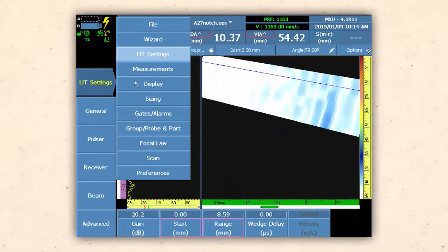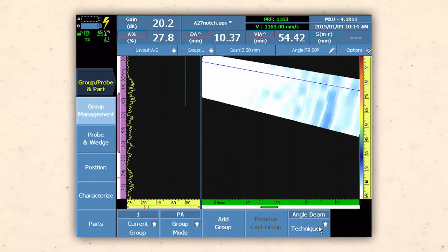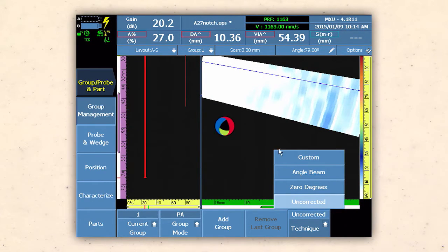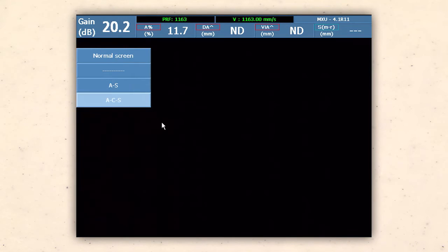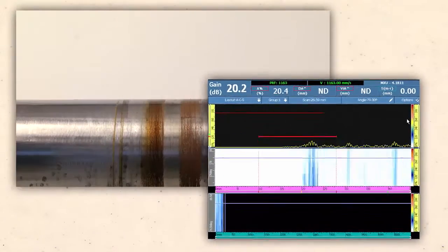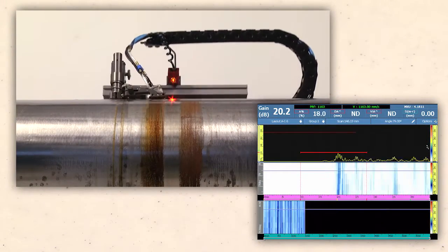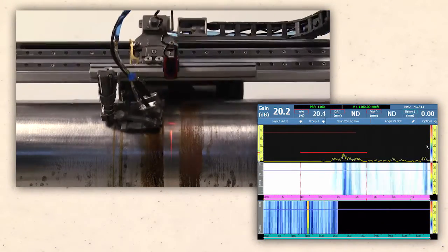For high angle surface testing, the OmniScan display is configured for an uncorrected S-scan to optimize the display size, and the gate is positioned to represent the width of the inspection area over the weld in the C-scan for detection of surface and near-surface flaws.